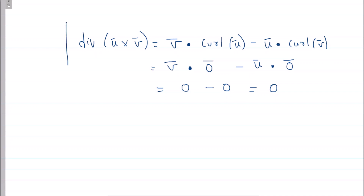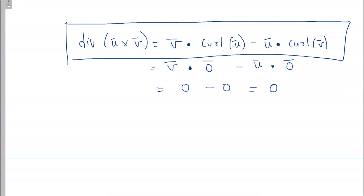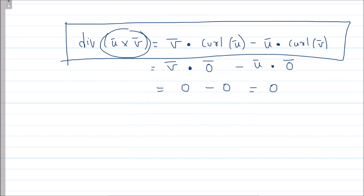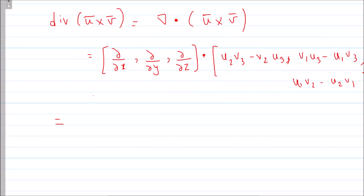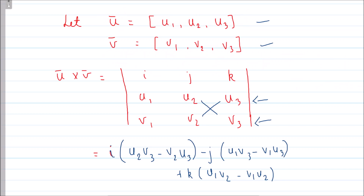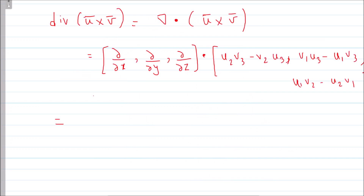Now let's prove this identity. We will compute the LHS and RHS and show they are equal. Let u = (u1, u2, u3) and v = (v1, v2, v3) in R3. The cross product u×v is computed via the determinant with rows i, j, k, then u, then v, giving: i(u2·v3 − v2·u3) − j(u1·v3 − v1·u3) + k(u1·v2 − v1·u2).